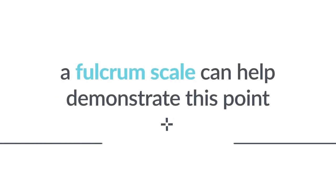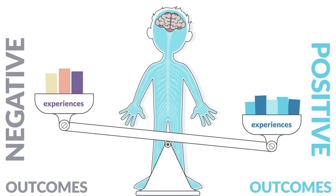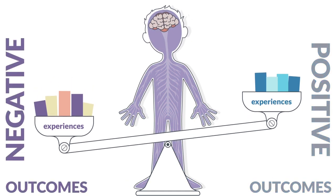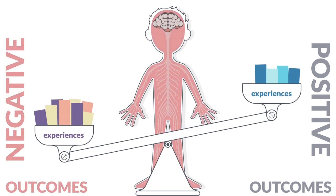A fulcrum scale can help demonstrate this point. When positive protective experiences outweigh negative experiences, a child's scale can tip towards positive outcomes. Likewise, negative experiences can destabilize positive development and tilt the scale toward negative outcomes. Some children start out with the scale tipped toward negative outcomes, putting them at greater risk for ACEs than other children.